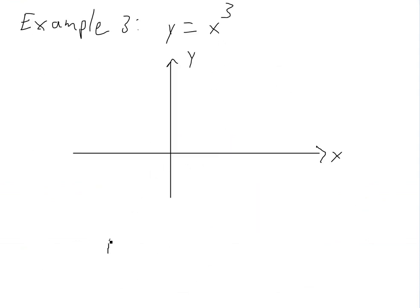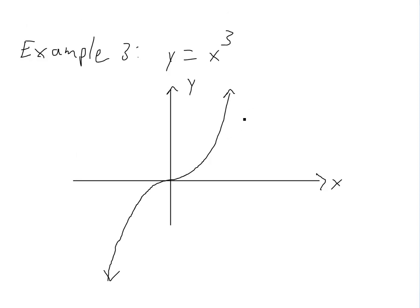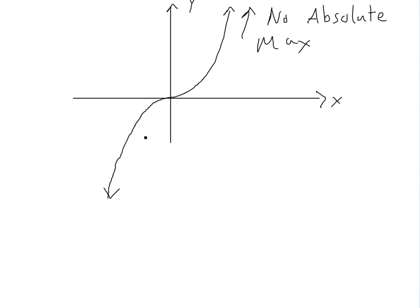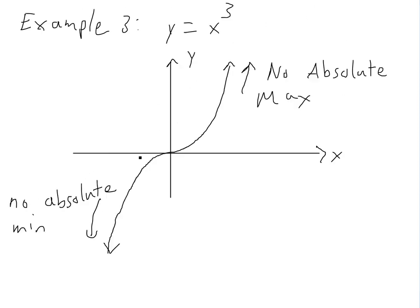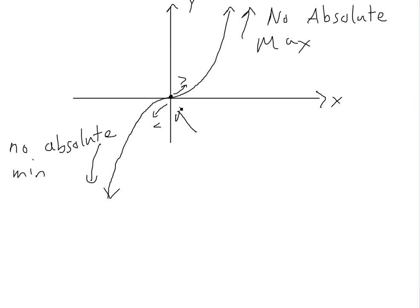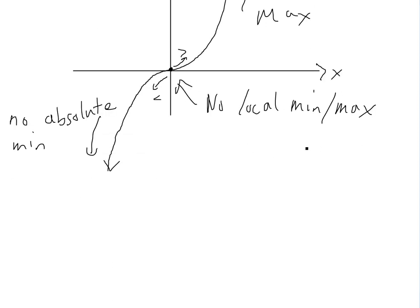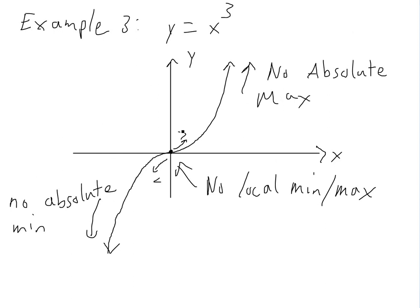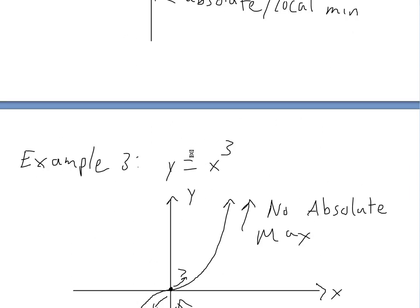Now let's look at example three: x cubed. If you graph x cubed it curves down and back up. There is no absolute maximum because it keeps going higher, and there is no absolute minimum because it keeps going lower. If you look for a local maximum near any point, from one side it's less than that point but from the other side it's greater, so there is no local max or min either. X cubed has no extreme values at all.